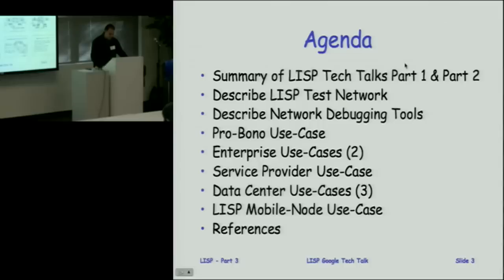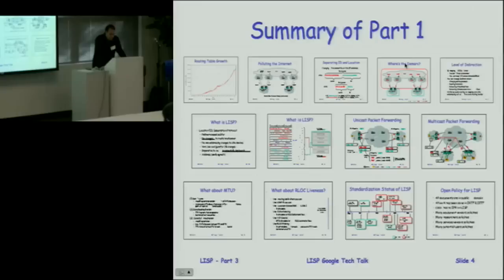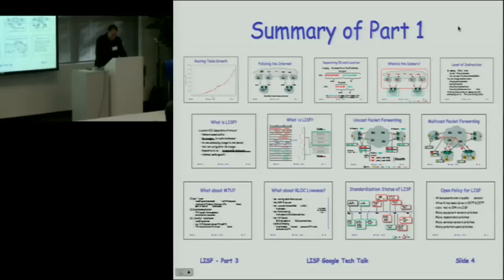Summary of the first presentation we gave, part one: we were talking about routing table growth. These are some of the high point slides from the first part — just a recap. We talked about how polluting the internet with more specific routes and PI prefixes is making the routing tables get larger and how LISP can help with that.